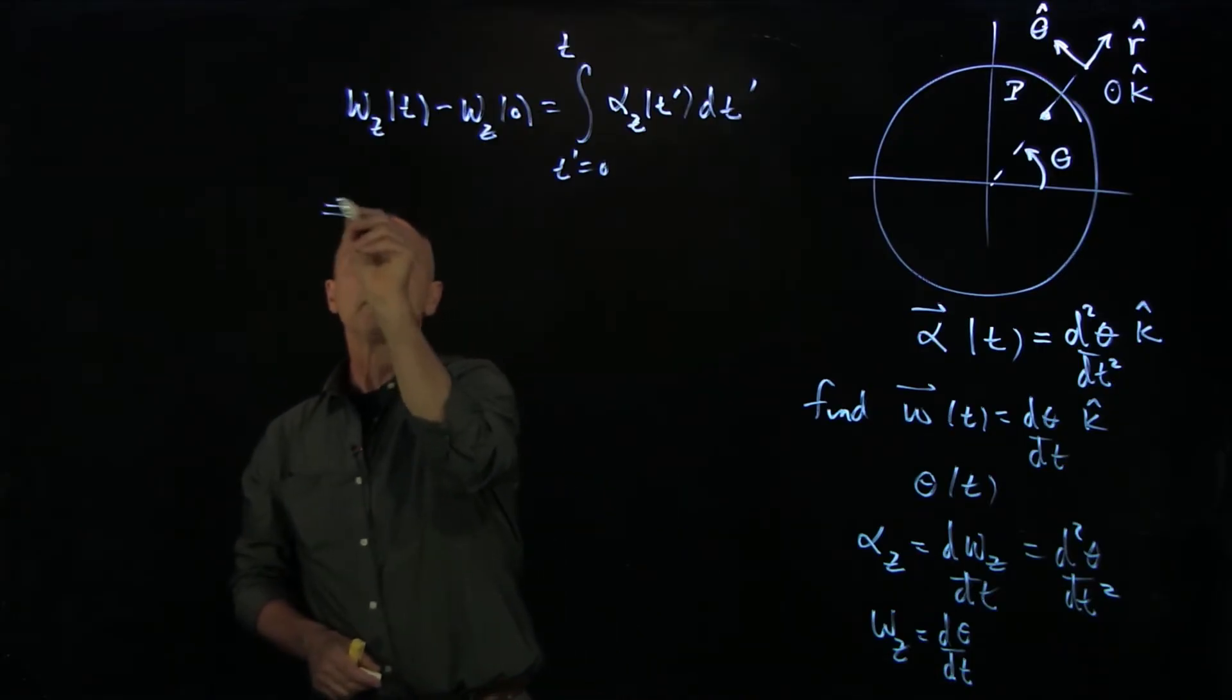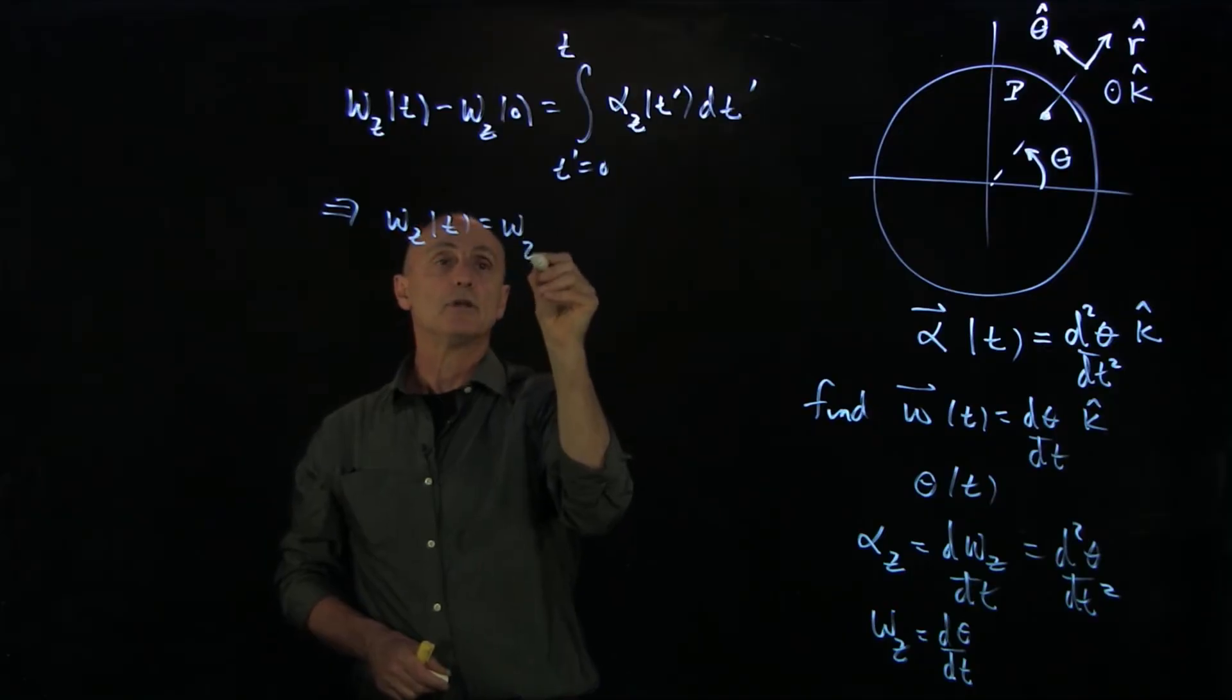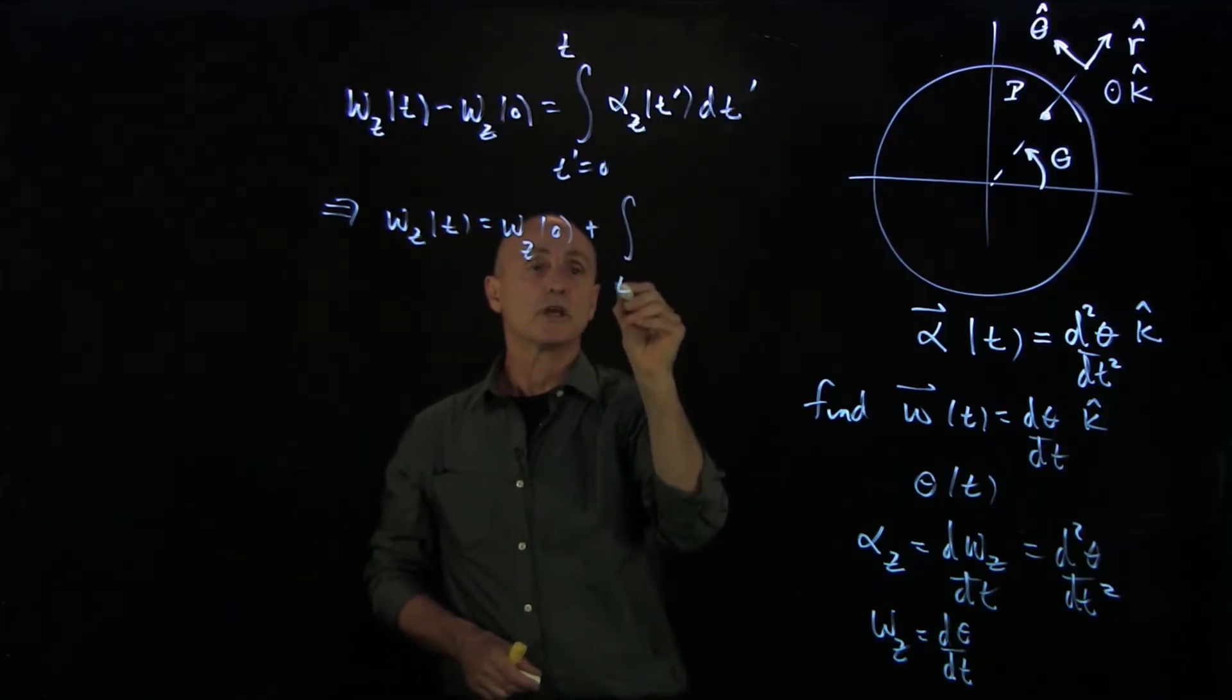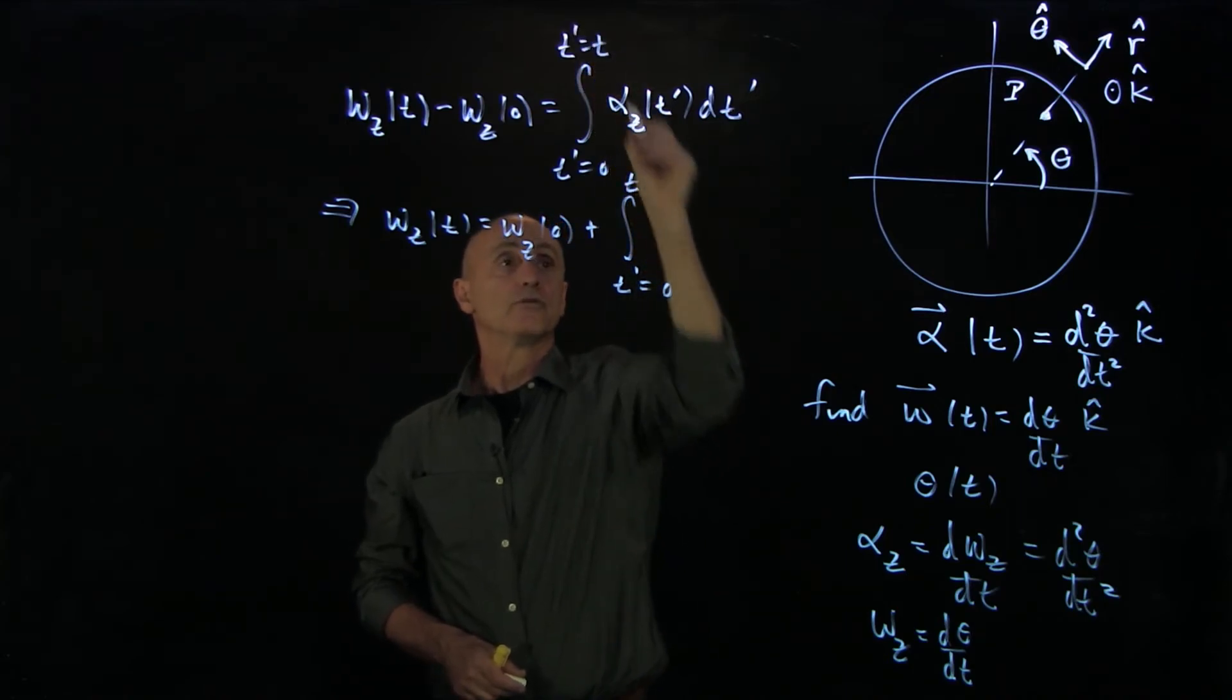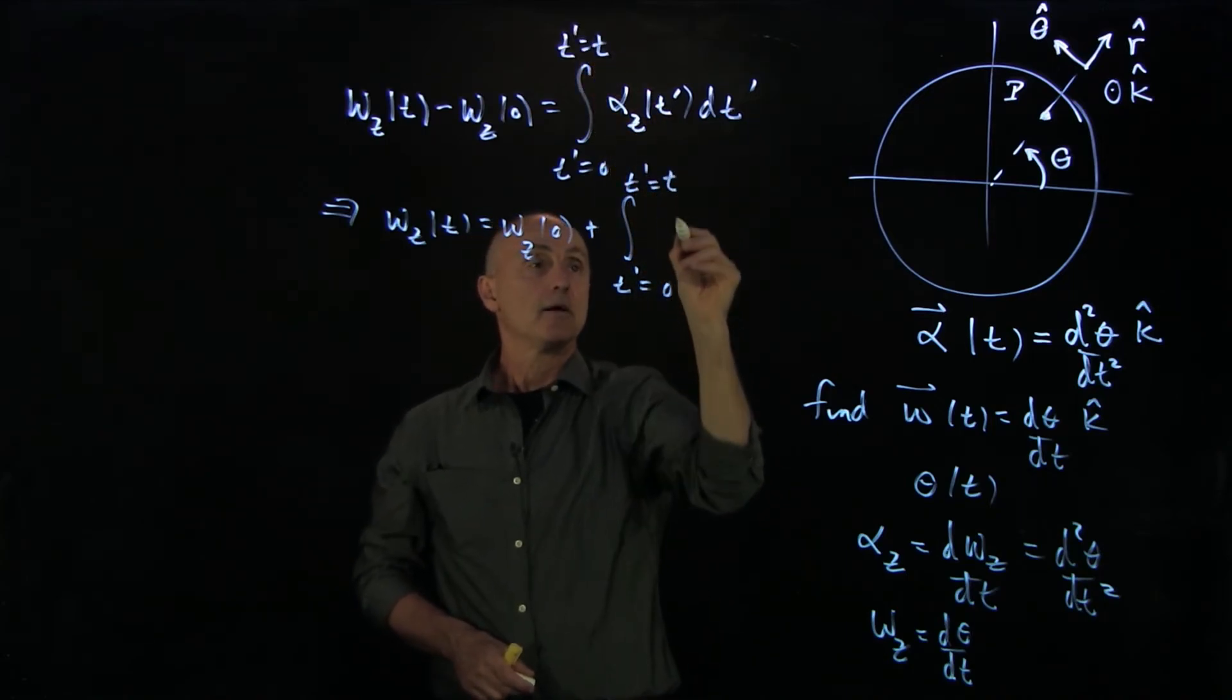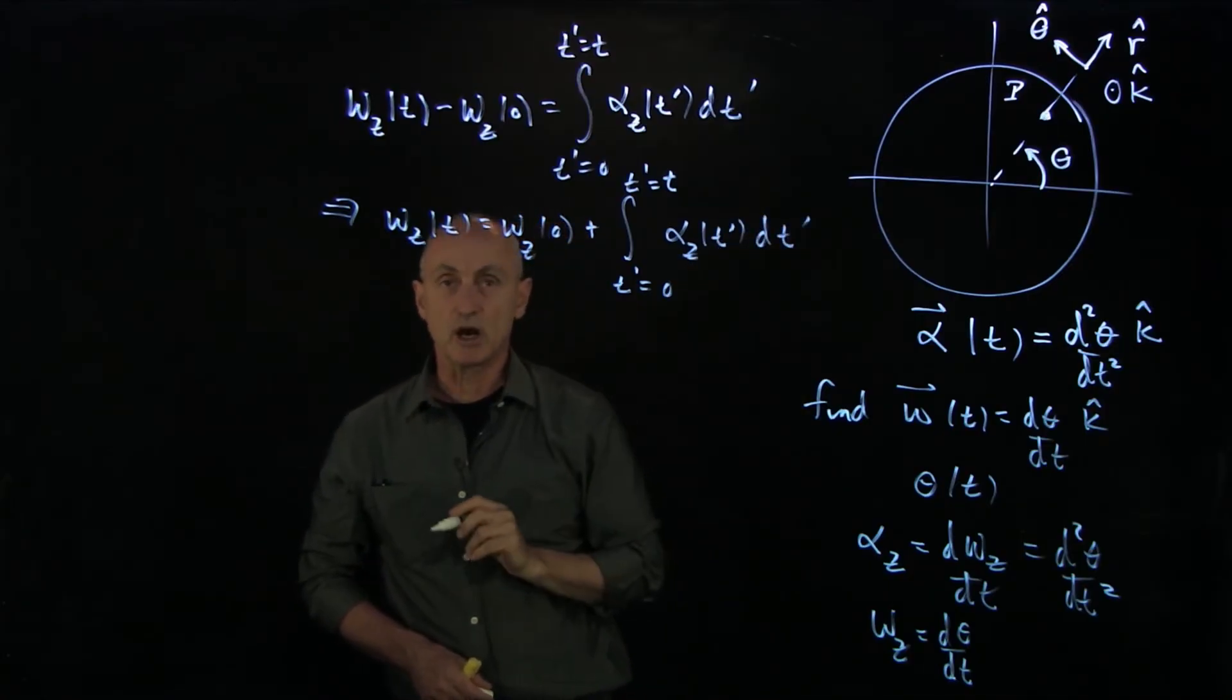Recall that this implies omega z t can have some initial value at time t equals zero plus this integral relationship, which is what we want to figure out by direct integration. This only works when alpha z is some function of time.